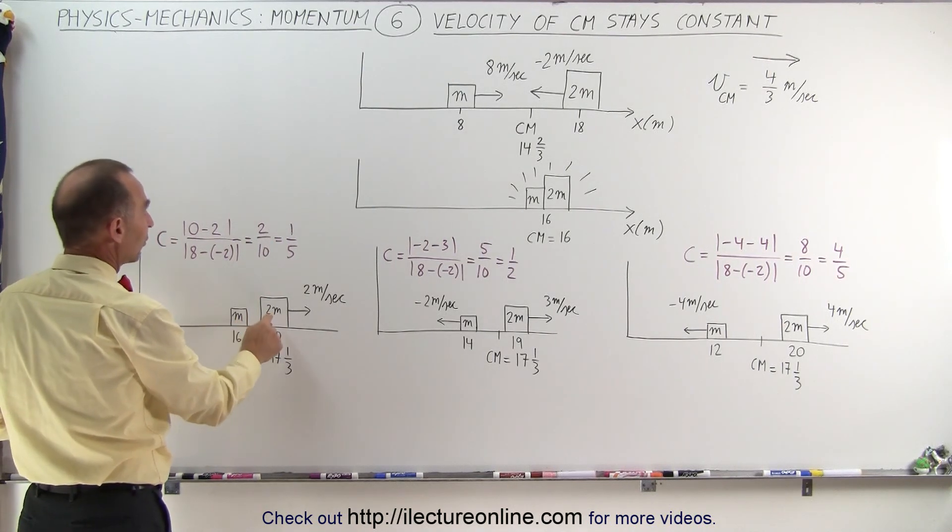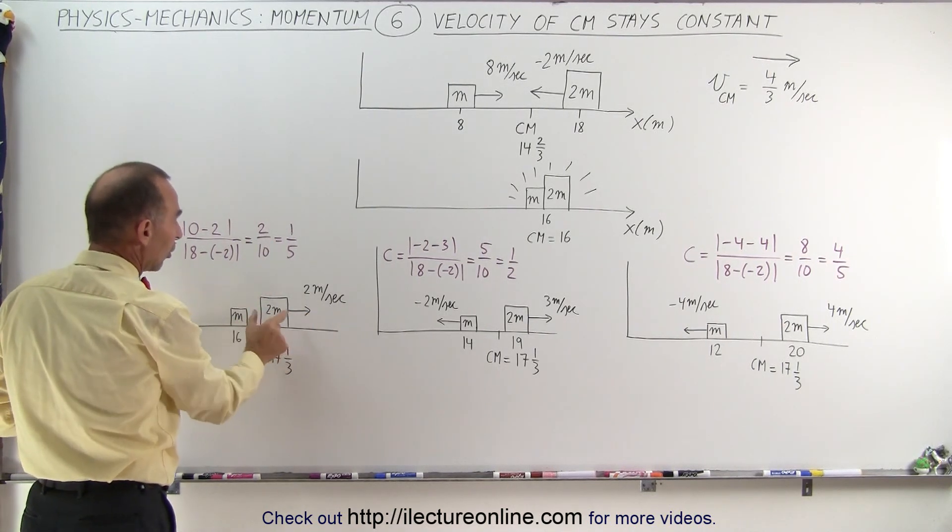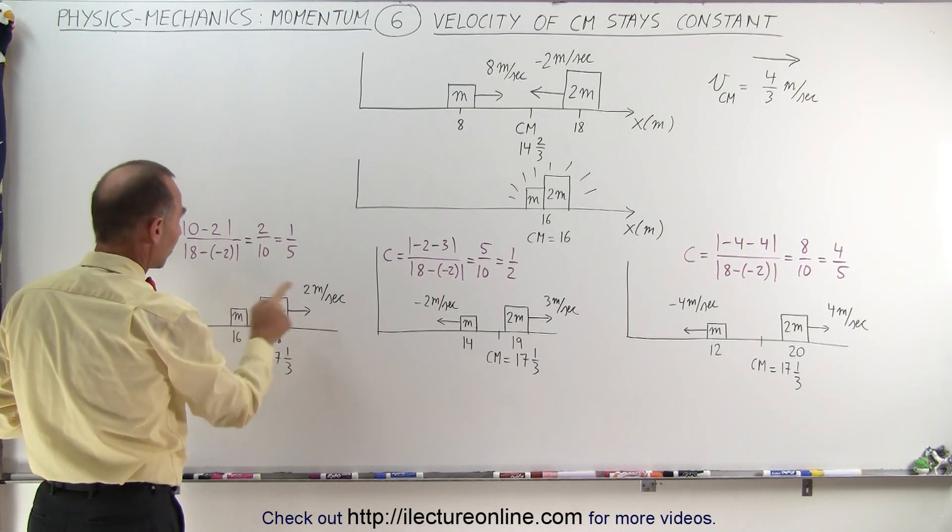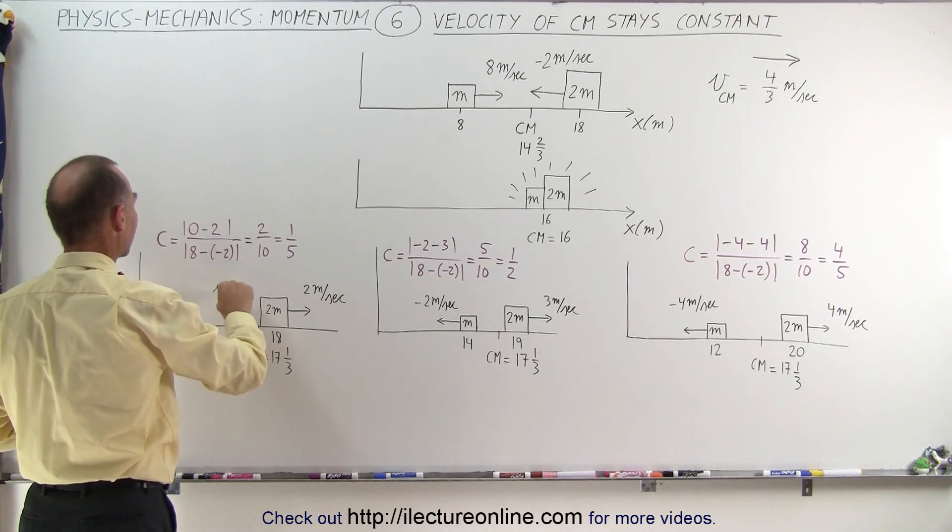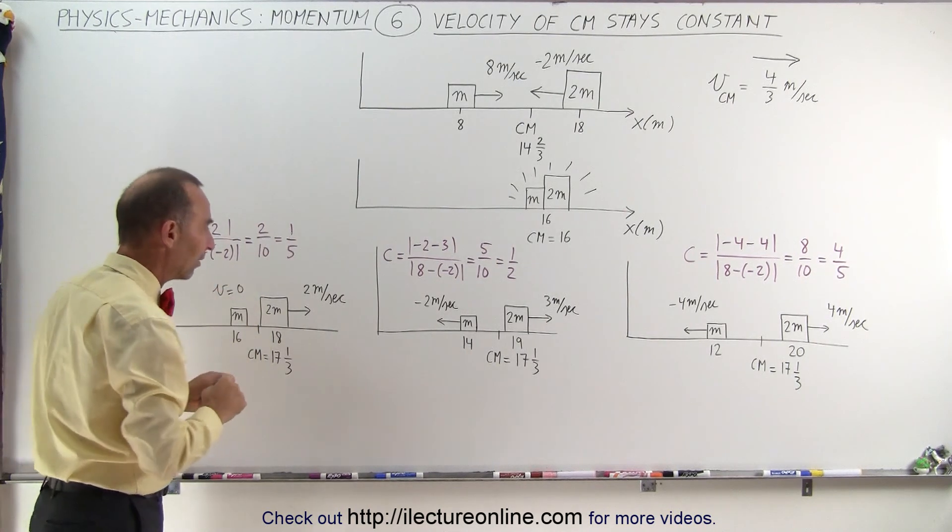The first scenario is where the large mass moves to the right at 2 meters per second, and the small mass stays in its location, so the velocity after the collision is zero for the small mass.